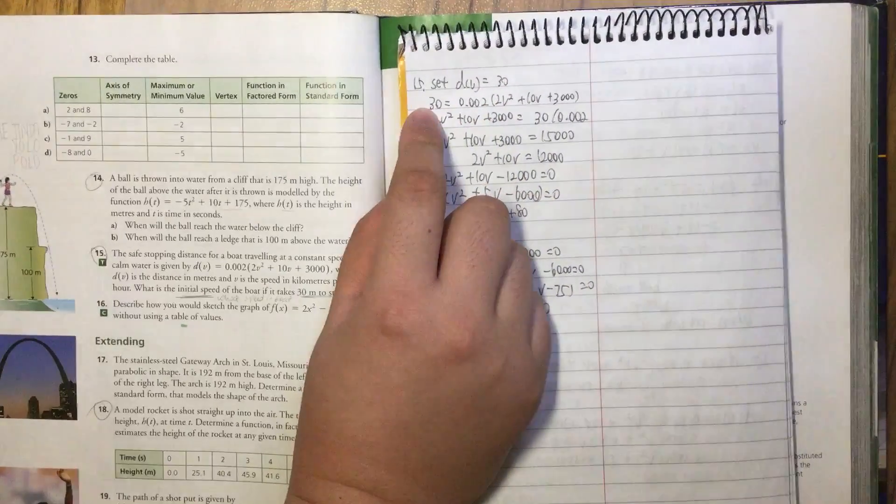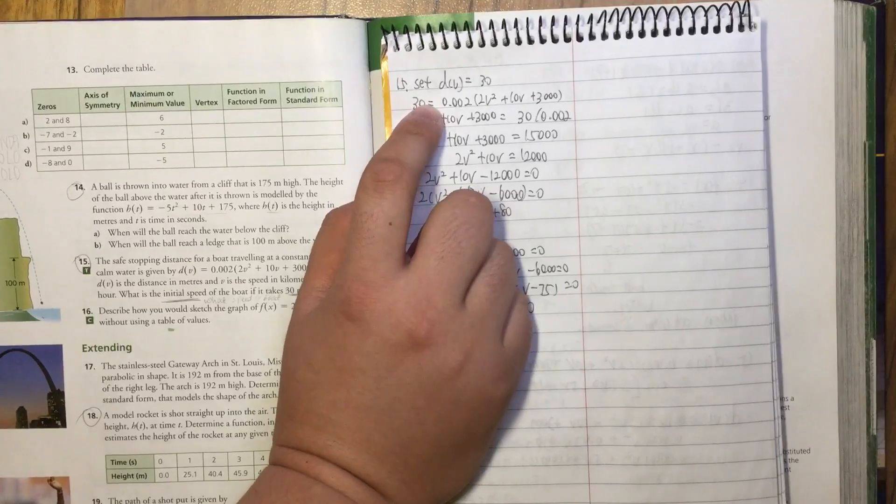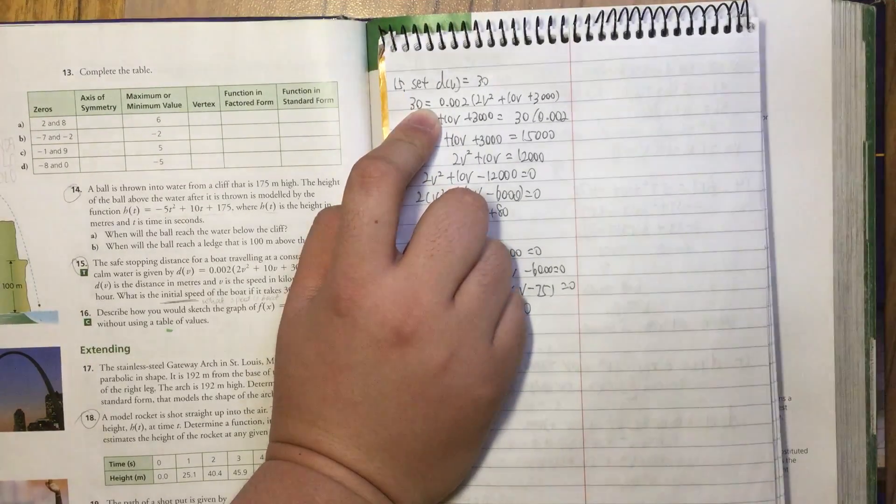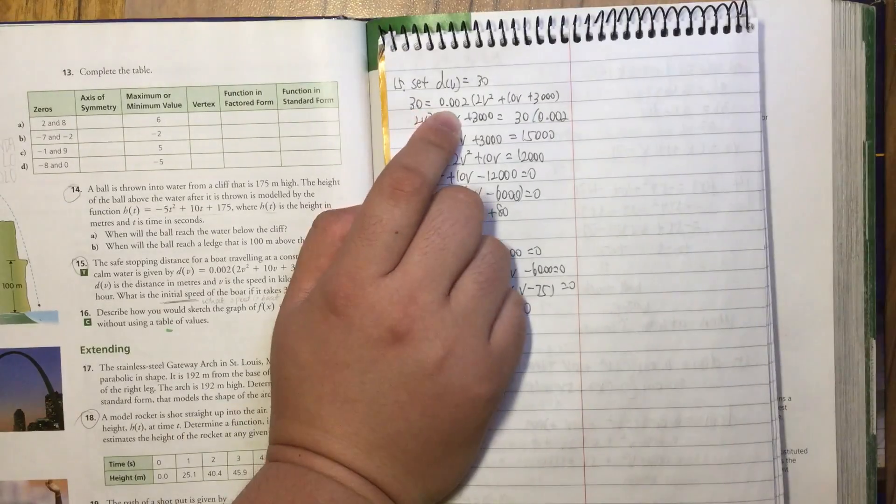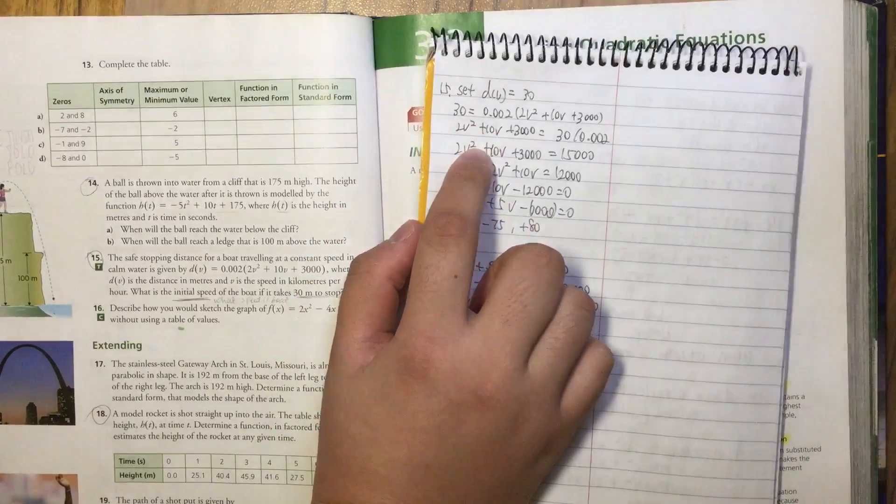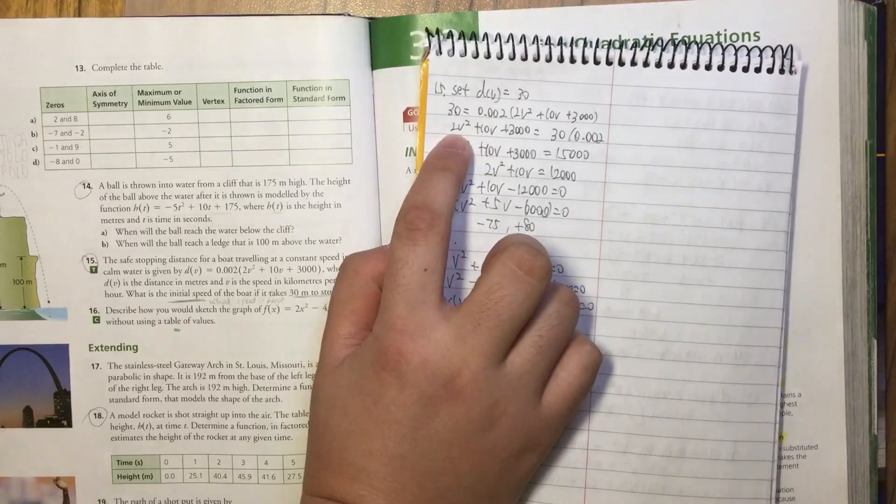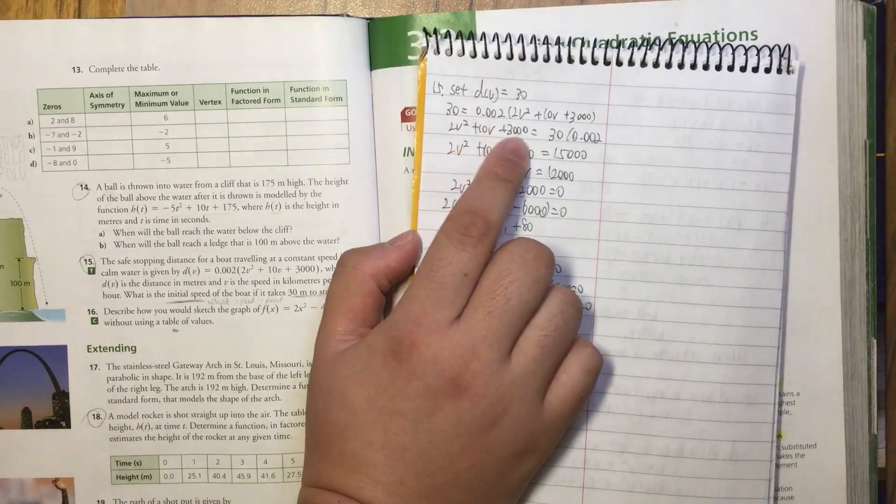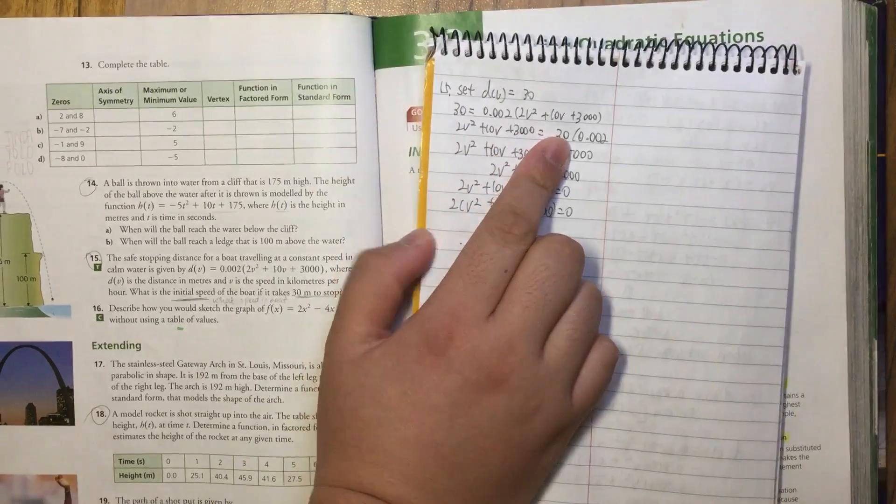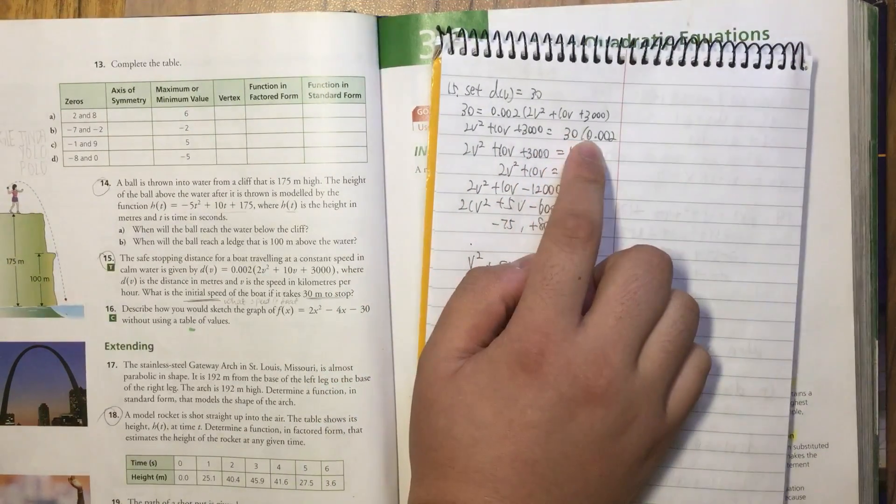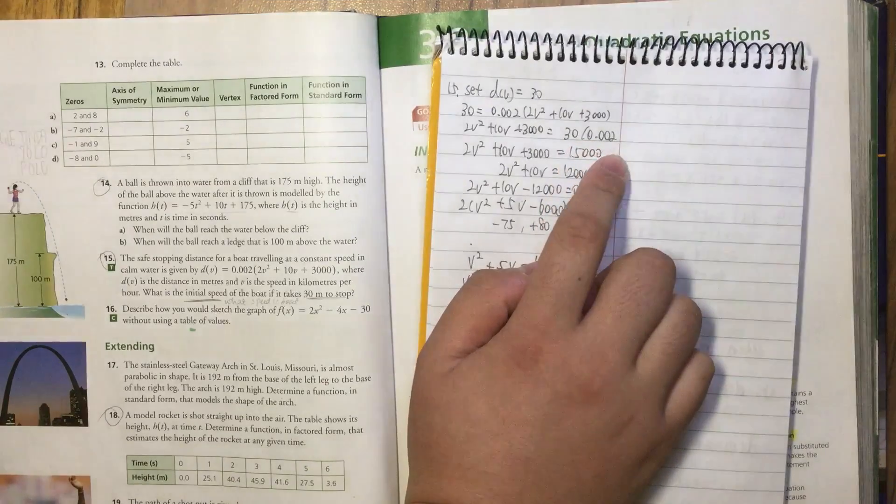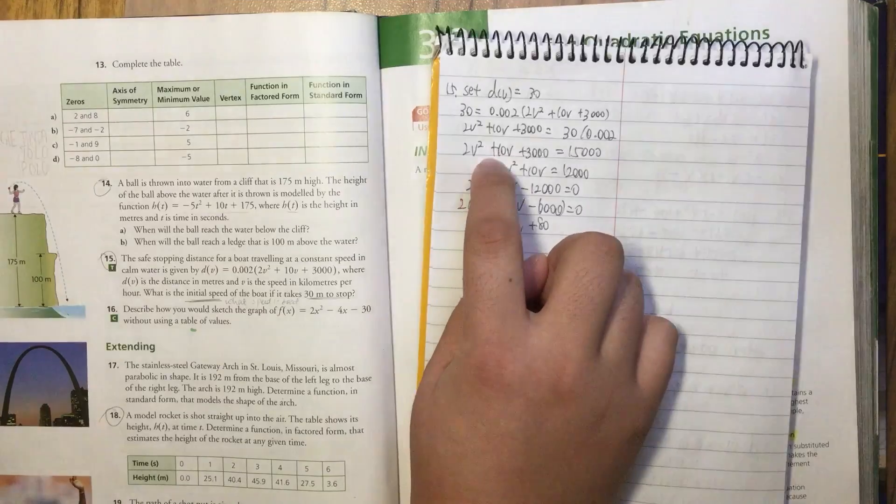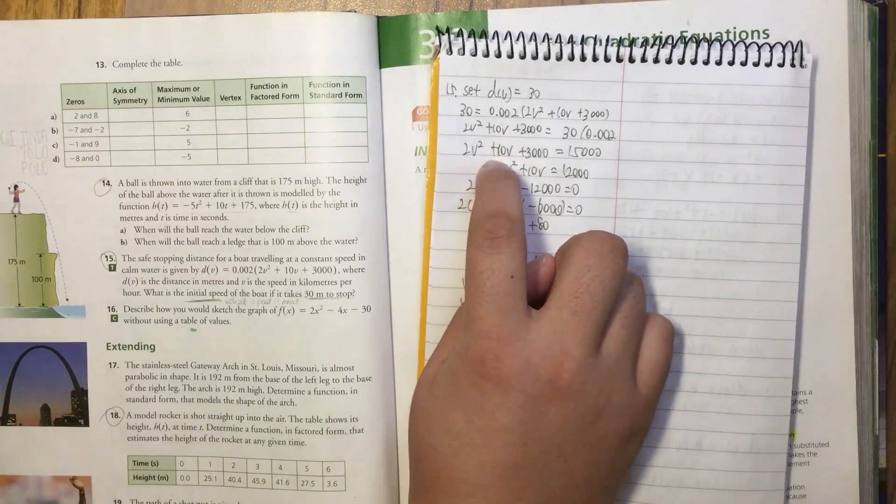We insert the distance as well, maybe you can say f(x) as 30, and we insert that into this equation. After that we calculate 13 over 0.002 and we get 50,000. Then we have 2V² + 10V + 3000 = 15,000.